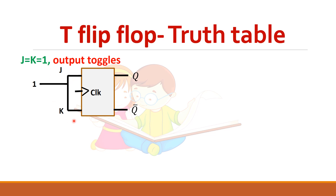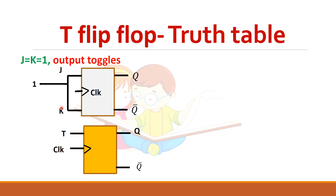So this forms the T flip-flop. In T flip-flop, there will be only one input. These two pins, J and K, will be connected internally. And if T is equal to one, the output will toggle.